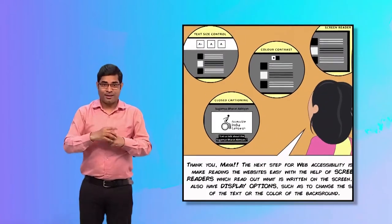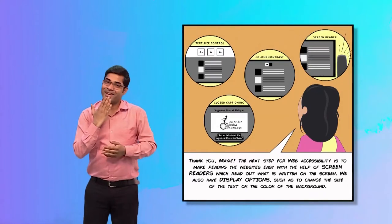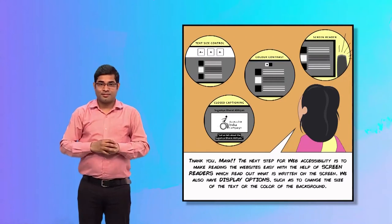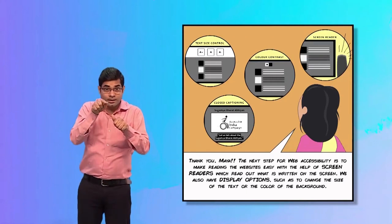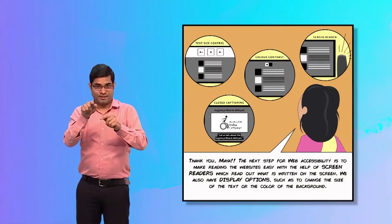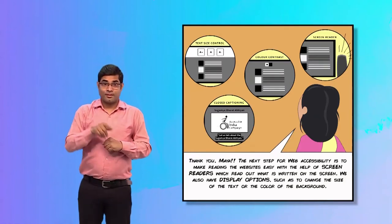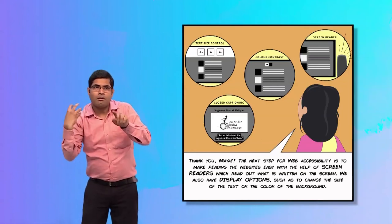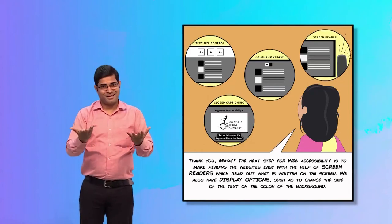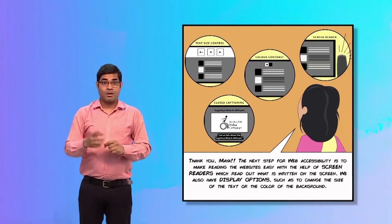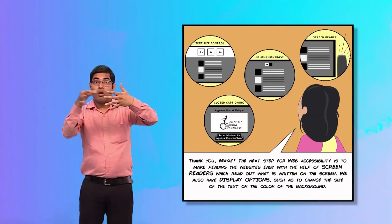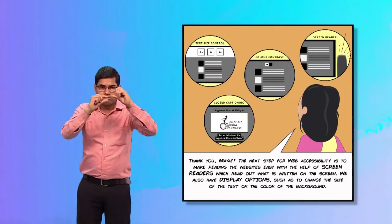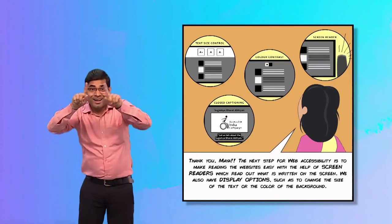Jyothi Ma'am says, 'Thank you, Maya! Children, the next step for web accessibility is to make reading websites easy with the help of screen readers, which read out what is written on the screen. We also have display options, such as changing the size of the text or the color of the background.'